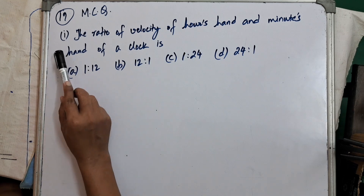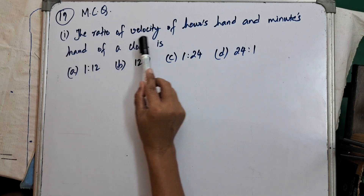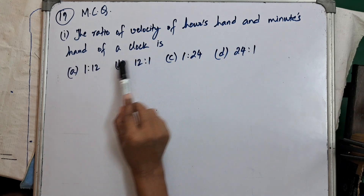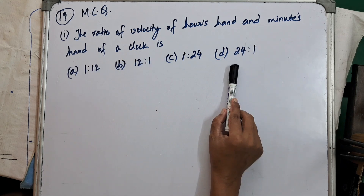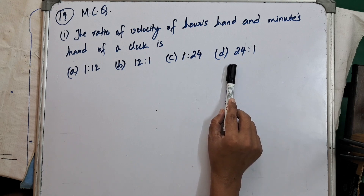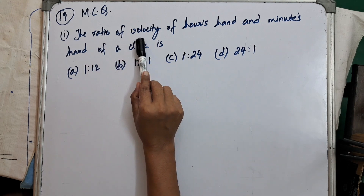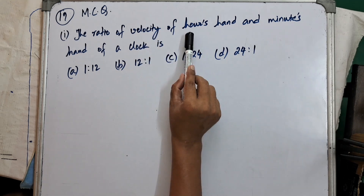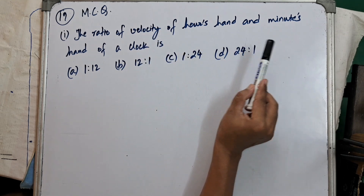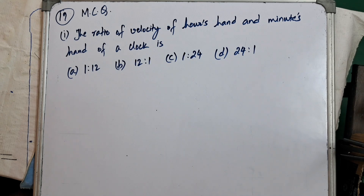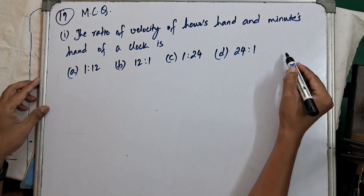This is question number 1 of 19. The ratio of velocity of the hour hand and minute hand of a clock is — we are provided with 4 options and asked to choose the correct one. Let's understand this question with a diagram first.